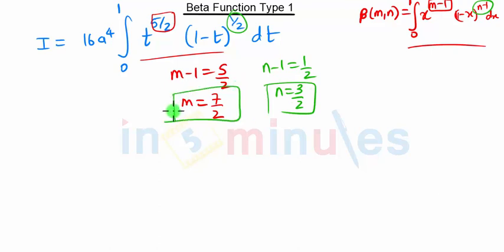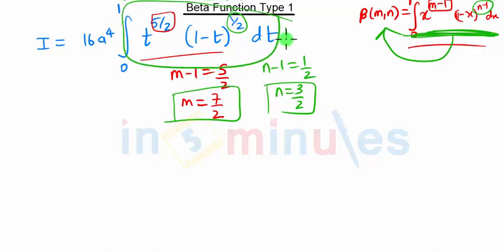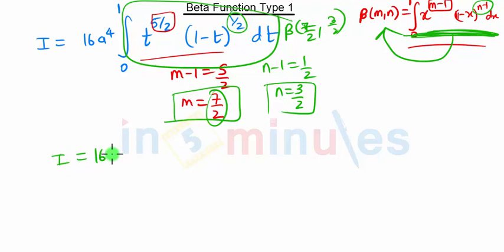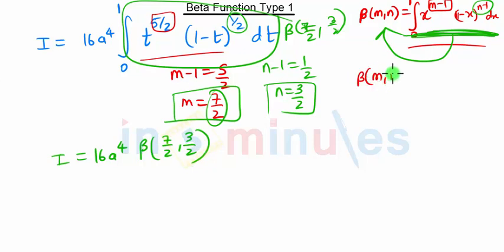So these are our m and n. And this term — if we have this term, this term is equal to Beta of m comma n. So this term will be equal to Beta of m comma n. In our case m is 7/2 and n is 3/2, so we have I equal to 16 a raised to 4 into Beta of 7/2 comma 3/2.